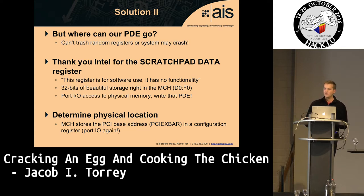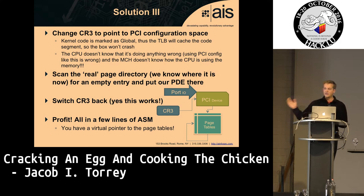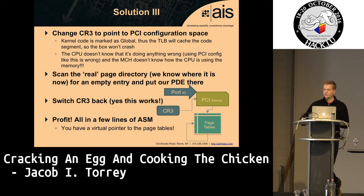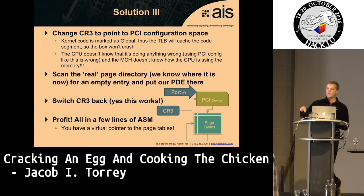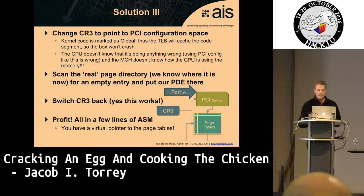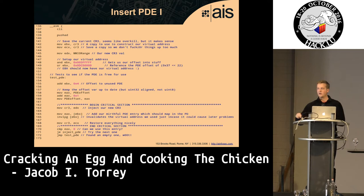We use the PCI Express BAR register to find where we are in physical memory and get a nice recursive memory mapping. We change CR3 to point to device memory as page tables — which should not happen, but thanks to PCI Express it can. It won't trash the TLB because kernel code is marked global. The CPU doesn't realize anything is wrong; it just asks the MCH for memory, and the MCH doesn't know why. Then we find the real page directory, locate a free entry, switch CR3 back to the OS, and now we have a virtual pointer to the OS — about 30 lines of assembly, really just four that matter.